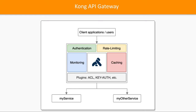Looking at different API Gateway implementations, Kong is one vendor. It provides monitoring, caching, access control, authorization, rate limiting, authentication, throttling, logging, and tracing — all very important features. The API Gateway handles all these and forwards requests to your microservices.